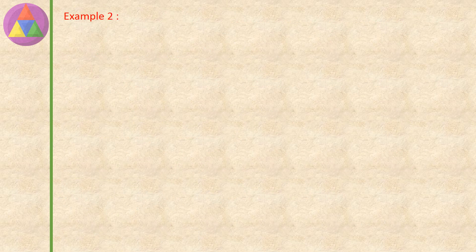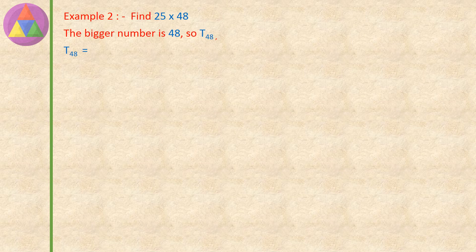Example 2: find 25 into 48. The bigger number is 48, so we find T48. T48 equals 48 into (48 plus 1), divided by 2, equals 48 into 49, divided by 2, equals 2352 divided by 2, equals 1176. So the value of T48 is 1176.